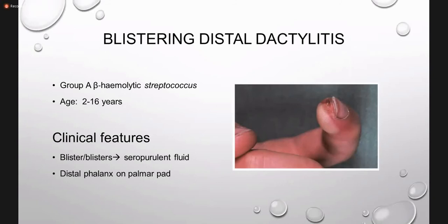The seventh bacterial infection is blistering distal dactylitis. As the name suggests, there is formation of a blister at the distal phalanx caused by beta-hemolytic streptococci. The blister is painful and involves the distal phalanx of the palmar pad.